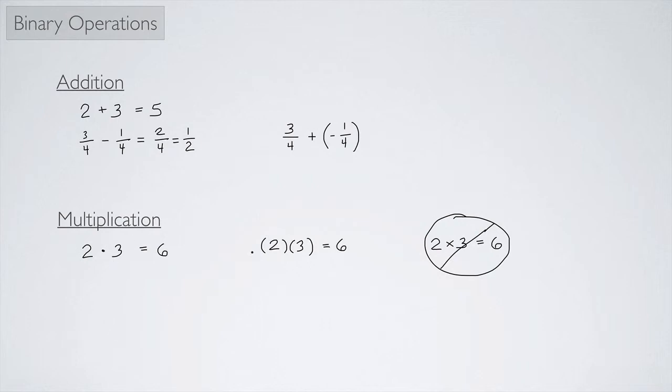Multiplication here is another binary operation that starts with two real numbers and gives you back another real number. We can think of division as multiplication in a certain sense, but we have to be careful because we can't divide by zero. As long as we're not dividing by zero, then we're okay.